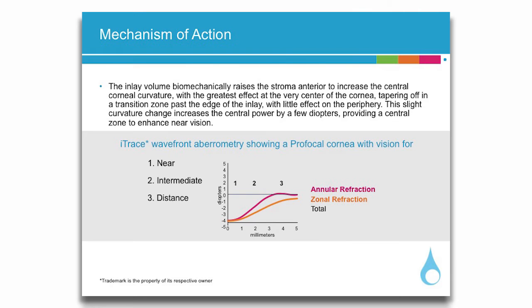This slight curvature change increases the central power by a few diopters, providing a central zone to enhance near vision. The graph shows refractive power in diopters on the y-axis versus distance from the center of the pupil in millimeters on the x-axis. Zone 1, near vision, occurs at 0 to 1 millimeters from the center of the pupil.